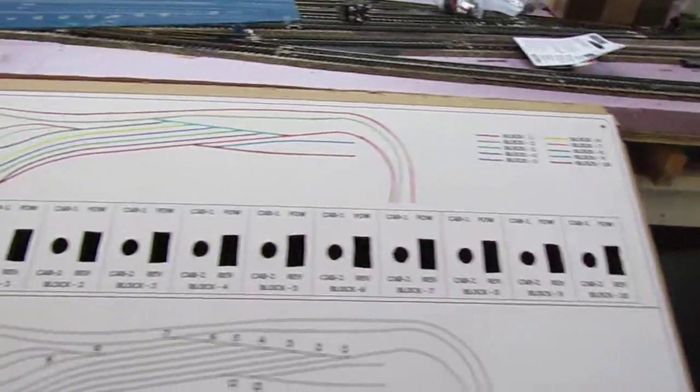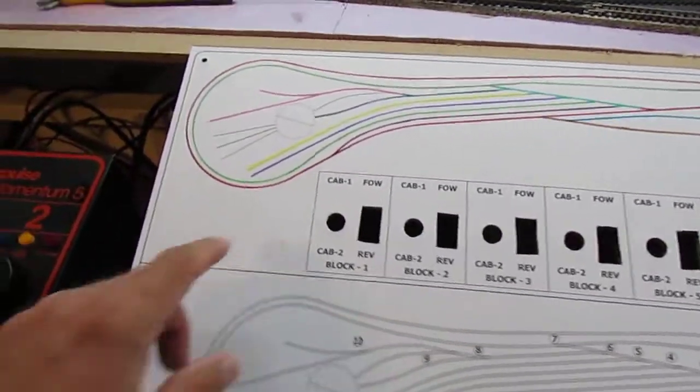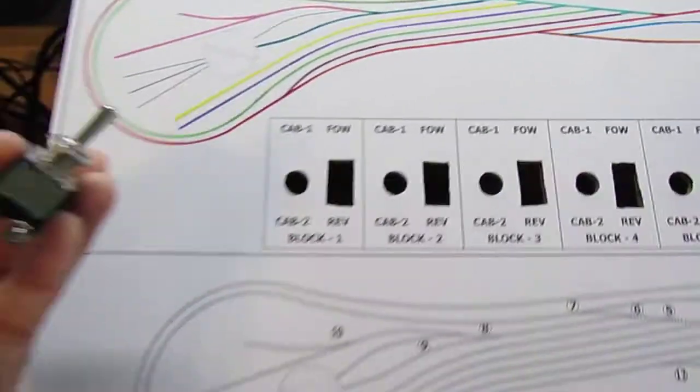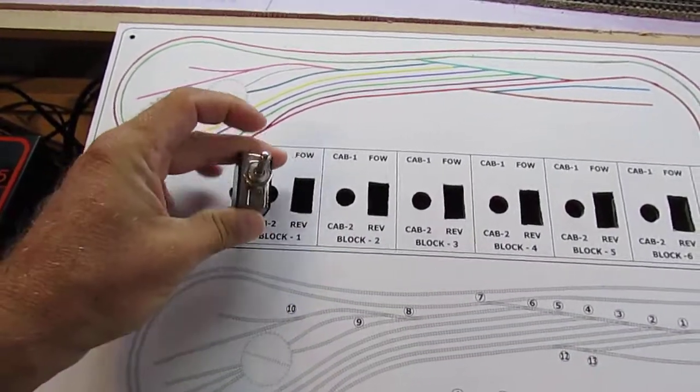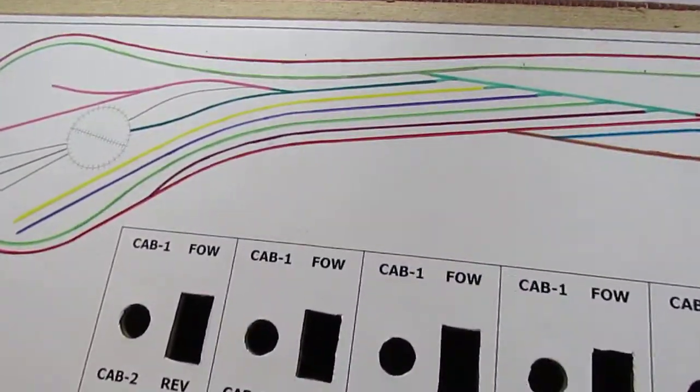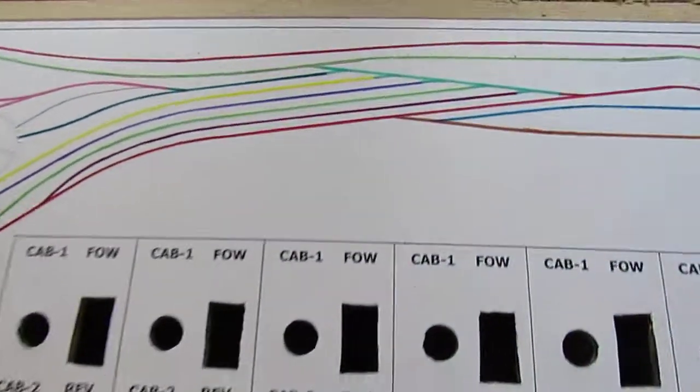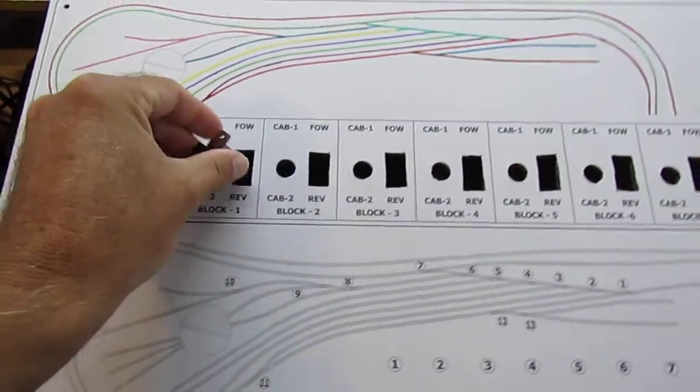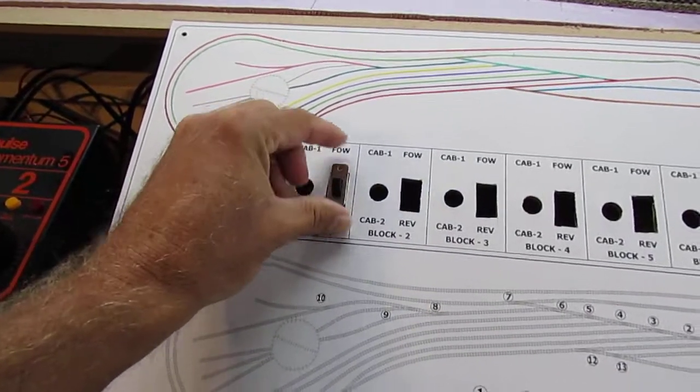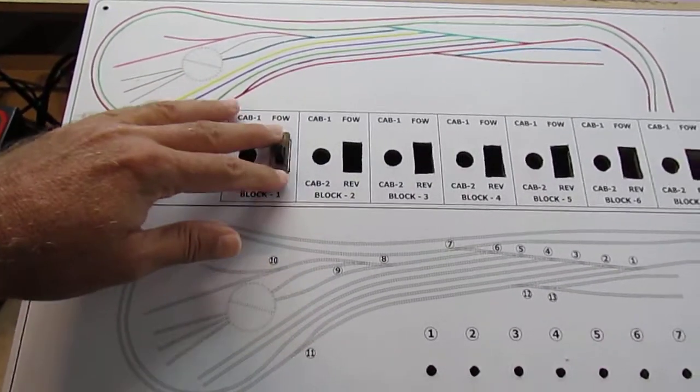In here I've got these toggle switches here. They'll be installed here and then right here is where the slide switch goes, which will enable me to change the direction of the locomotive. It just fits down in a slot like that. I'm not still might paint these black. I don't really like that chrome look.